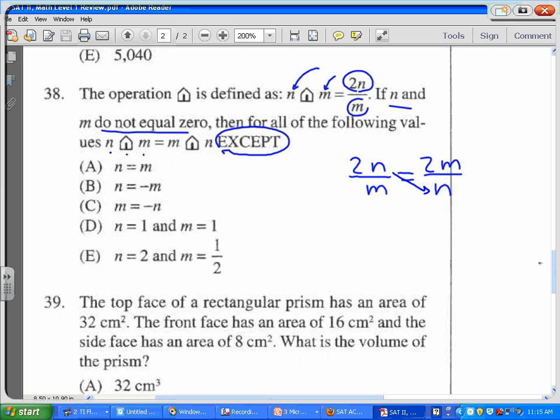And so if we do a cross product here, we're going to get that 2n squared is equal to 2m squared. And if we divide by 2 on both sides, n squared equals m squared.